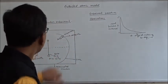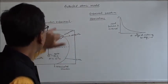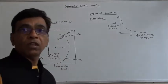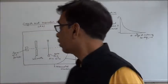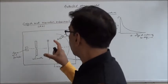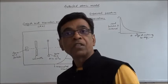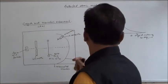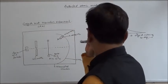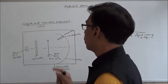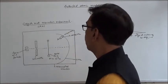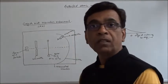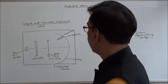An experiment was performed by Geiger and Marsden — we also call it Rutherford's experiment. The results of this experiment were explained by Rutherford. Geiger and Marsden performed this experiment in 1911.